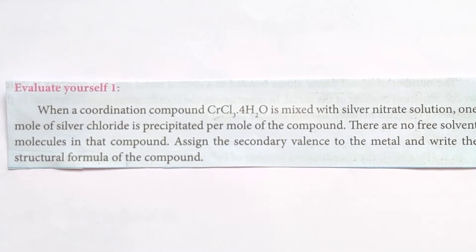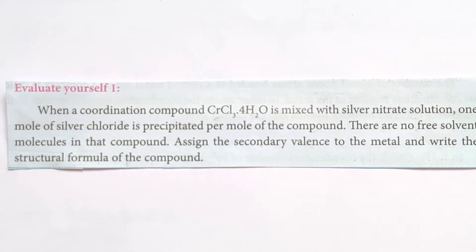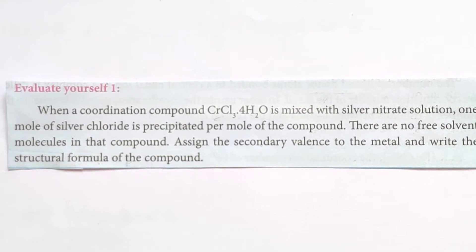The question has about four lines but the answer is very simple. Let us try to understand the question. One coordination compound is CrCl3·4H2O — that is the formula. When dissolved in water and silver nitrate is added, silver chloride is precipitated. The important point is that 1 mole of silver chloride is precipitated. There are no free solvent molecules in that compound — this is the second hint. We need to find the secondary valence of the metal and write the structural formula of the compound.